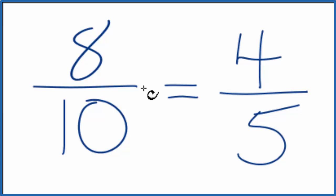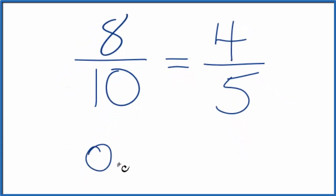If you were to divide 8 by 10 in your calculator, you'd get 0.8. If you divided 4 by 5, you would get 0.8. So these are equivalent fractions.